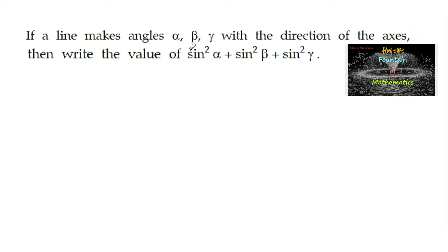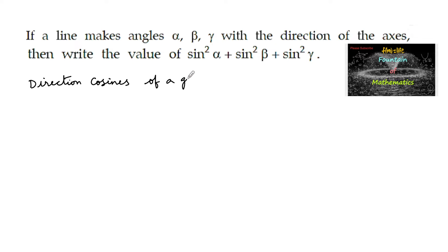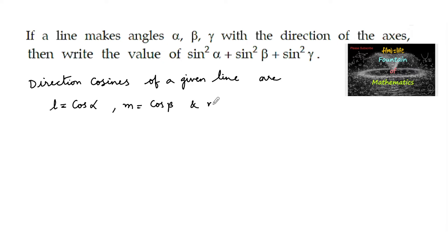If a line makes angles alpha, beta, gamma with the direction of the axes, find the value of sin squared alpha plus sin squared beta plus sin squared gamma. Since a line makes angles alpha, beta, gamma with the direction of the axes, the direction cosines of the given line are: l equals cos alpha, m equals cos beta, and n equals cos gamma.